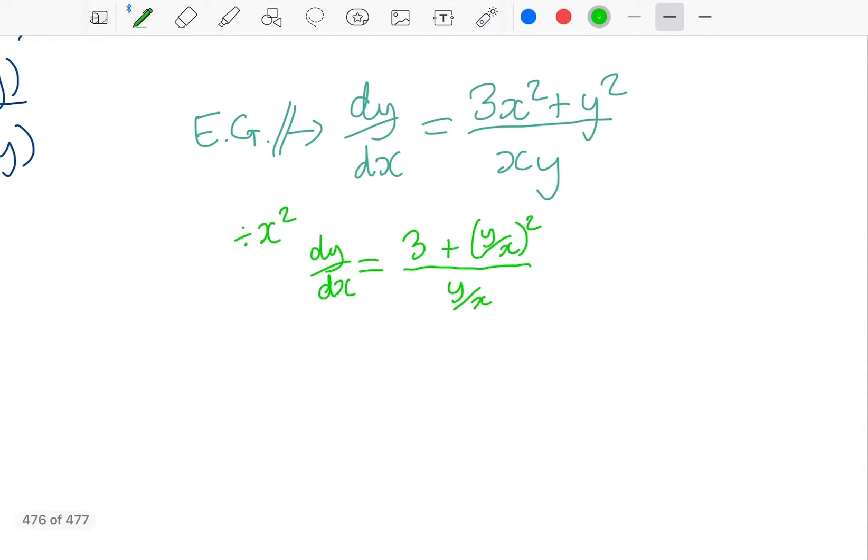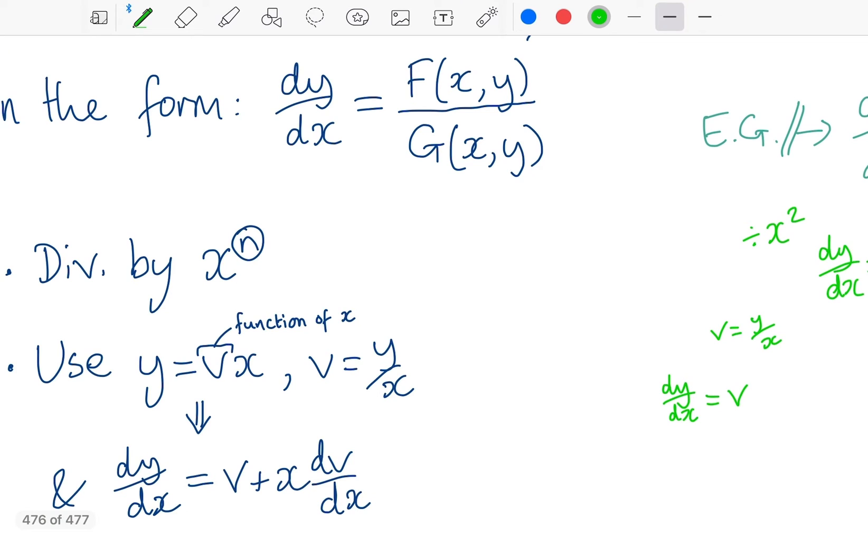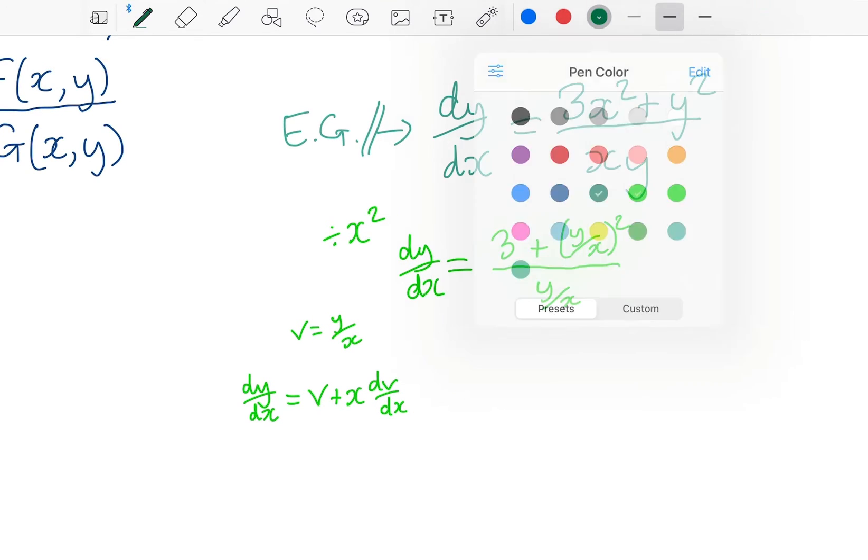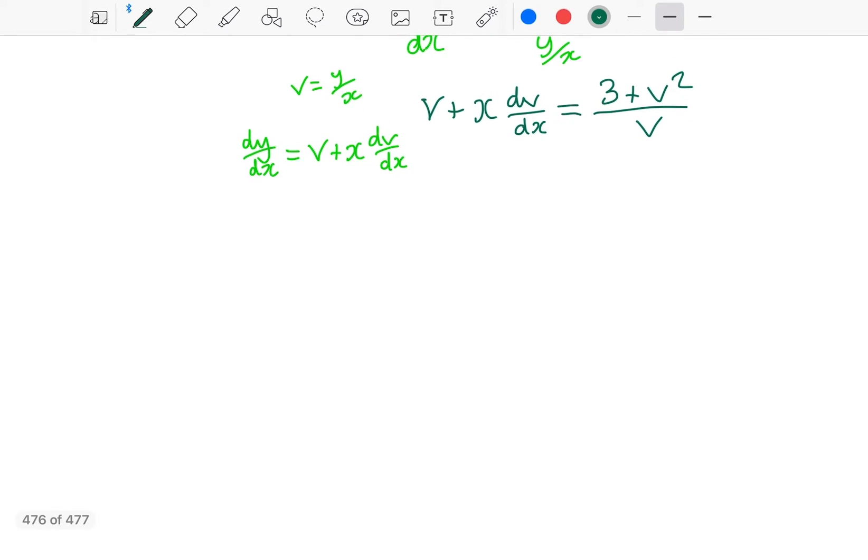We're going to use this substitution v equals y over x and as we said dy by dx equals v plus x times dv by dx. And that's what we're now going to have on the left hand side. And then I'm going to substitute the y over x's for v and now I'm going to try and solve with my separable equations method.